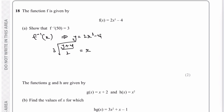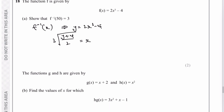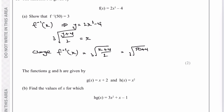Once I've done that, I change everything back, so the inverse function of x equals the cube root of (x plus 4), all divided by 2. Therefore to demonstrate that f⁻¹(50) equals 3: substituting 50 for x gives the cube root of (50 plus 4) divided by 2, which is the cube root of 54 divided by 2, that's the cube root of 27, which equals 3.